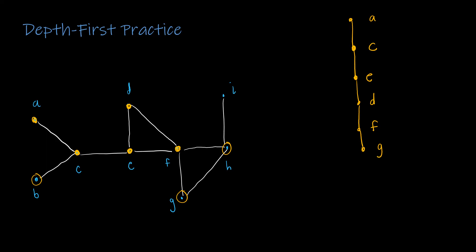And then from G, I can only choose H. So now I have visited H. I should have been creating the actual tree as I go. From H, I can only visit I. And now I have to backtrack all the way back to C to get this very last vertex of B.